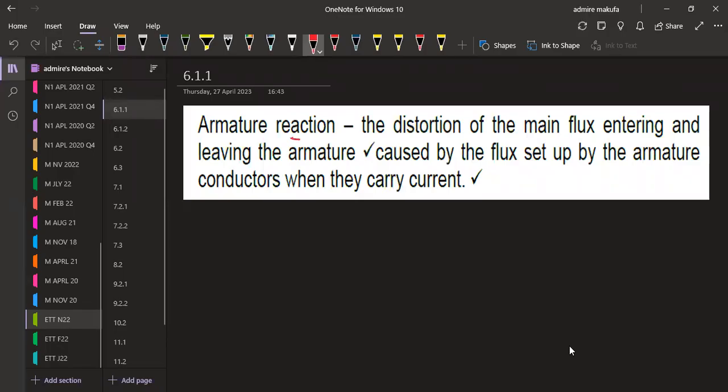So armature reaction in this case, this is the distortion of the main flux entering and leaving the armature caused by the flux set up by the armature conductors when they carry current. So that's a distortion which is happening in the main flux entering and leaving the armature, caused by the flux set up by the armature conductors when they carry a current.